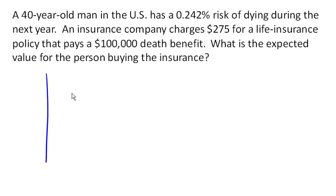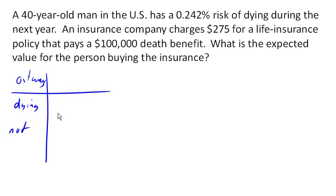There are two possible outcomes here. Outcome number one is dying, and outcome number two is not dying. Each of those has an associated probability. The probability of dying is 0.00242.